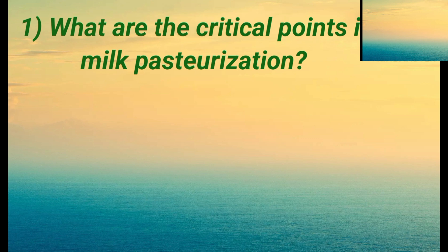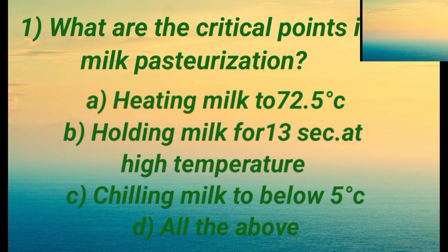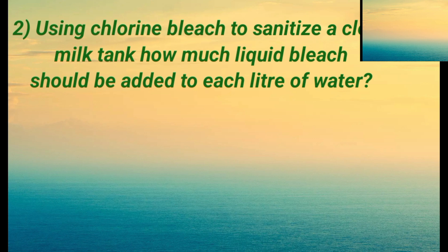Option A is heating milk to 72.5 degrees Celsius. Option B is holding milk for 13 seconds at high temperature. Option C is chilling milk to below 5 degrees Celsius. Option D is all of the above. The right answer is D: all of the above.